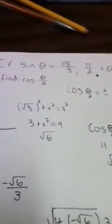I have problem number 24. If sine theta equals square root 3 over 3, where pi over 2 is less than theta, which is less than pi, find cosine theta divided by 2.